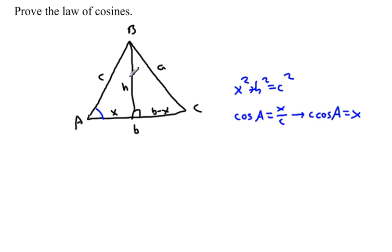Now what I'd like to do is take a look at this triangle on the right-hand side. Using the Pythagorean theorem, we can say that b minus x quantity squared plus h squared is equal to a squared.